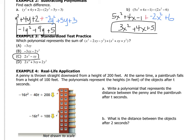A penny is thrown straight down from a height of 200 feet. So, you see, there's a person throwing down a penny. At the same time, a paintbrush falls from a height of 100 feet. So, there's that 100-foot paintbrush. The polynomials represent the heights in feet of the objects after t seconds. Part a. Write a polynomial that represents the distance between the penny and the paintbrush after t seconds. So, this is a very bizarre question, but we're just going to go with it. I don't know who's throwing pennies and paintbrushes on the ground. That's very dangerous. But, let's do it anyway.